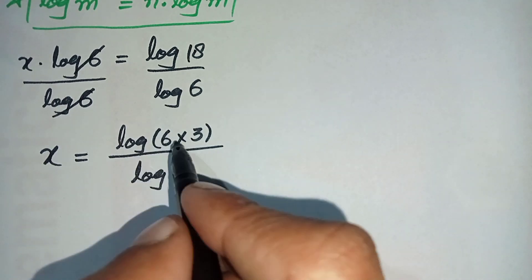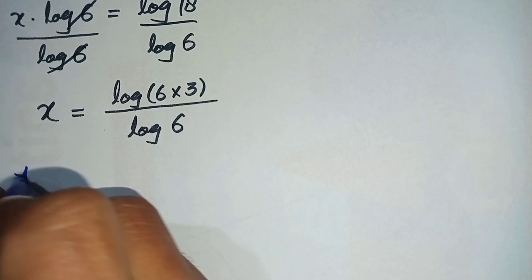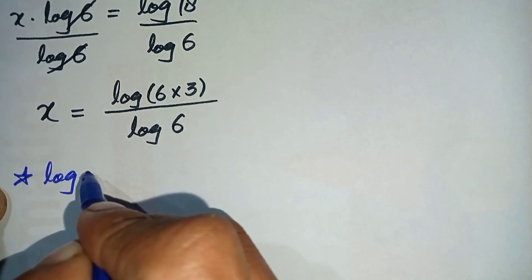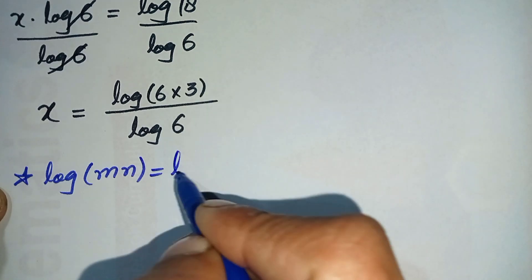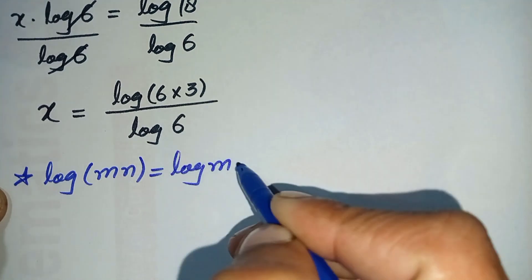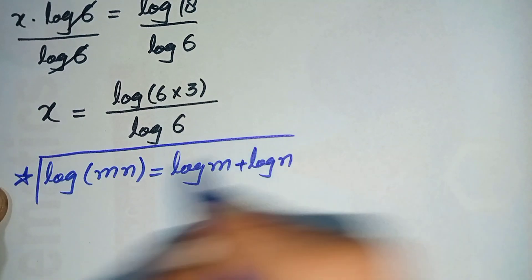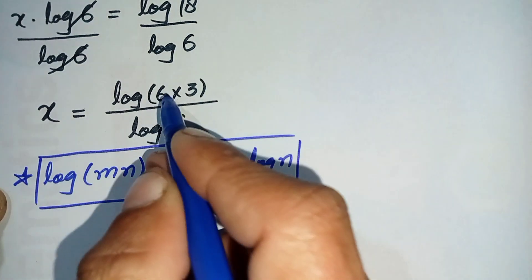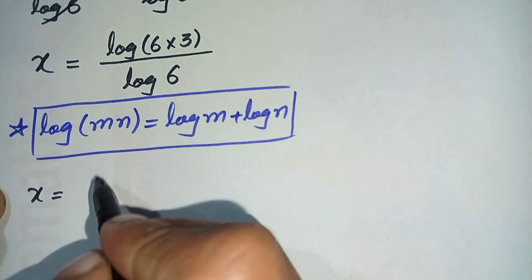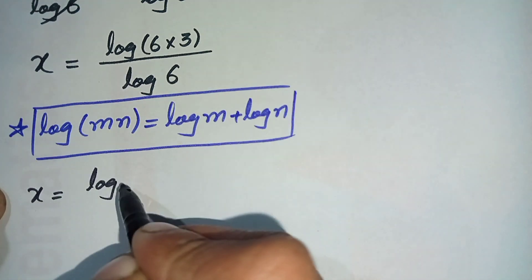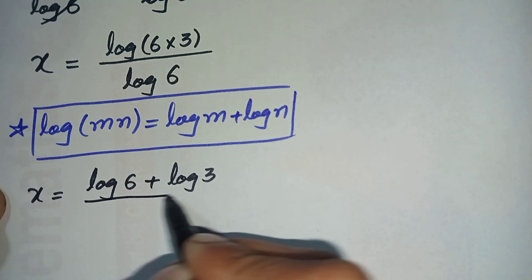In the numerator of this equation we will use the log product property: log of m times n can also be written as log of m plus log of n. By applying this property, the equation becomes x is equal to log of 6 plus log of 3, divided by log of 6.